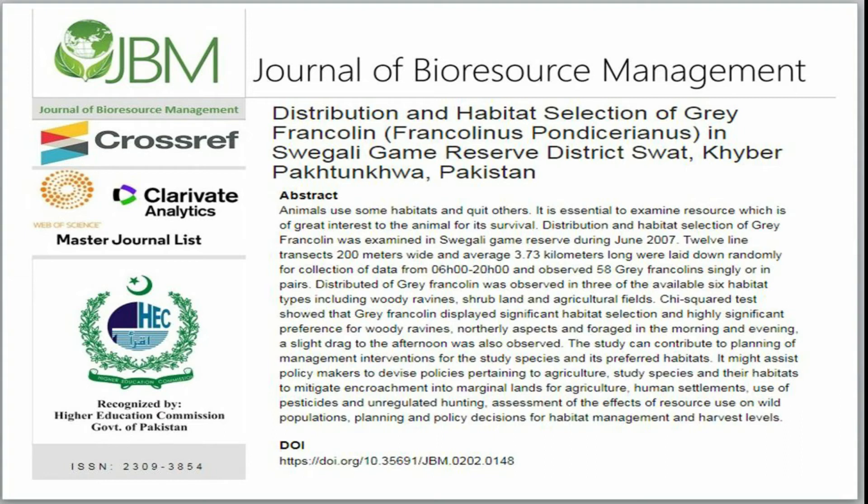Distribution of Gray Francolin was observed in three of the available six habitat types, including woody ravines, shrubland, and agricultural fields. Chi-squared tests showed that Gray Francolin displayed significant habitat selection and highly significant preference for woody ravines and northerly aspects, and foraged in the morning and evening. A slight tendency toward the afternoon was also observed.